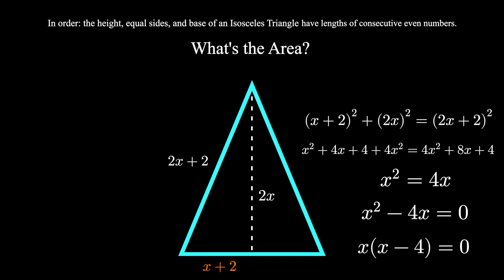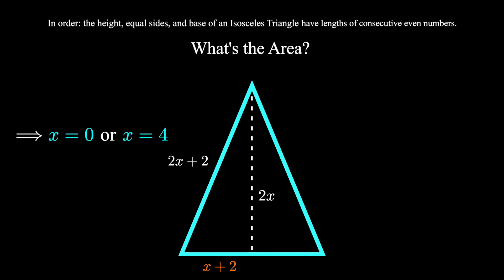gives us that x equals 0, or x minus 4 equals 0, meaning x is 0 or 4. Now if x equals 0, we don't have any triangle at all. Let's throw away that answer and say x is 4.